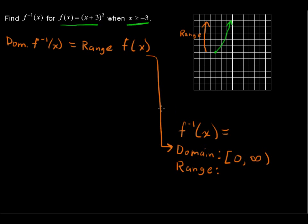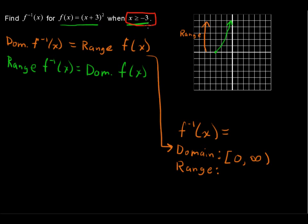We also know that the range of the inverse equals the domain of the original function. And they tell us the domain — x is greater than or equal to negative 3. We can see it here as well; it just goes on forever. So the range of the inverse is going to be from negative 3, including negative 3, and then increasing to the right without bound.